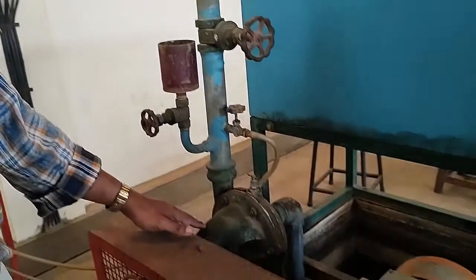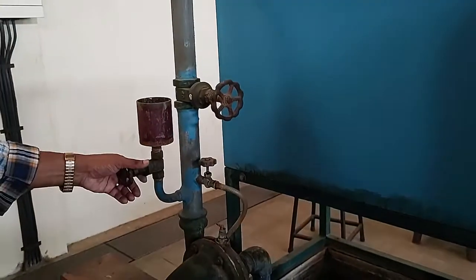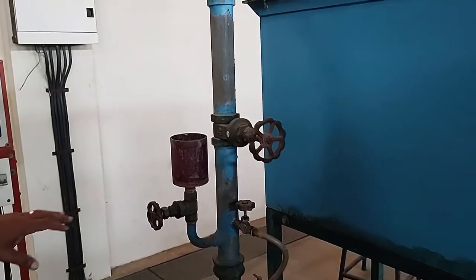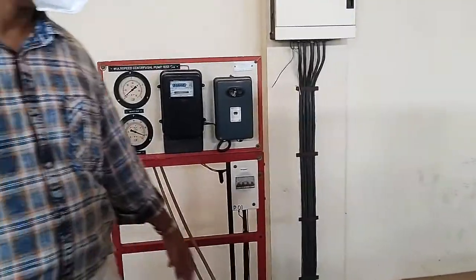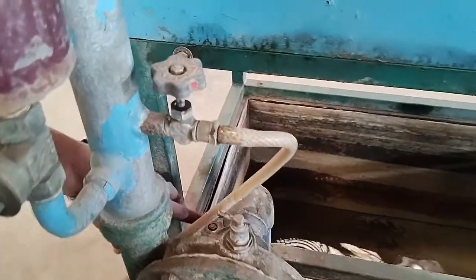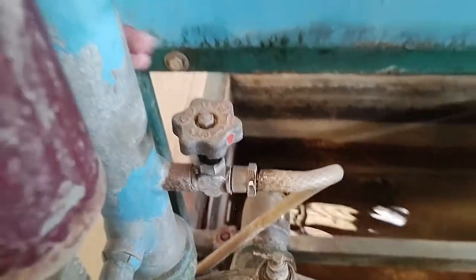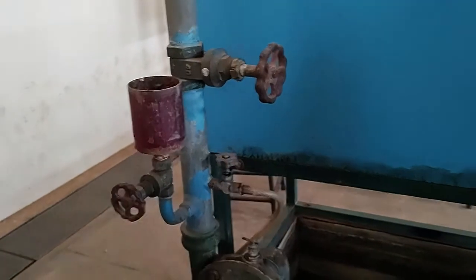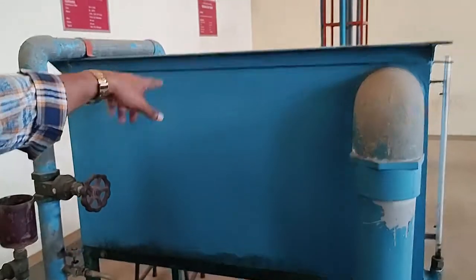This is the centrifugal pump. This is the priming valve, suction gauge, suction gauge valve, delivery gauge valve, and this is the measuring tank.